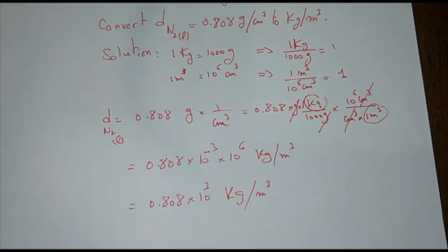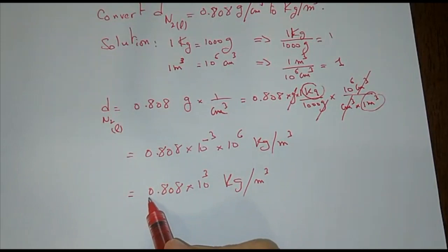The 1,000 will go up. So it's 0.808 times 10⁶ over 10³, which equals 0.808 times 10³ kilograms per meter cubed. And the final answer will be 0.808 times 10³ kilograms per meter cubed.